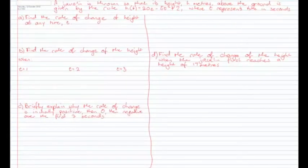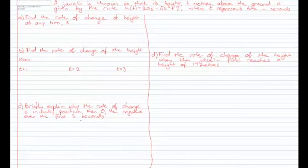So this question says: a javelin is thrown so that its height h metres above the ground is given by the rule h(t) = 20t − 5t² + 2, where t represents time in seconds. Part A: find the rate of change of height at any time t. Part B: find the rate of change of the height when t equals 1, 2 and 3 seconds. Part C: briefly explain why the rate of change is initially positive, then 0, then negative over the first 3 seconds. Part D: find the rate of change of the height when the javelin first reaches a height of 17 metres.